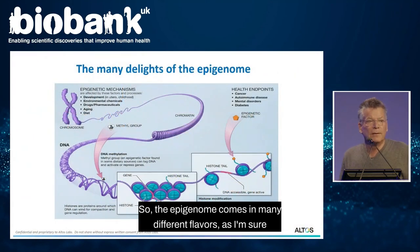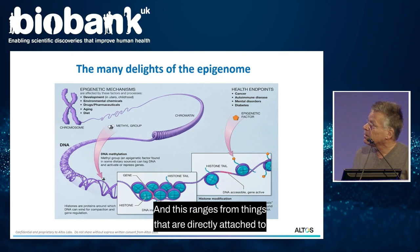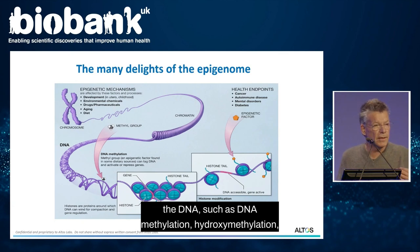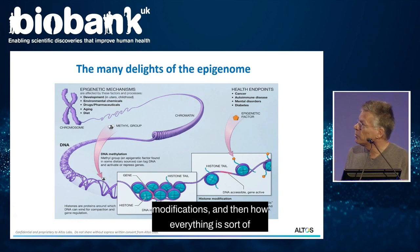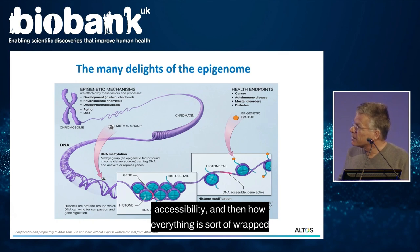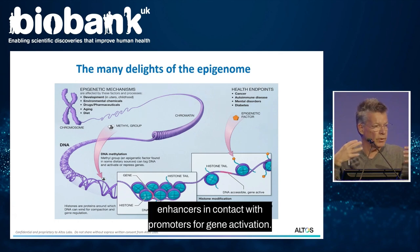The epigenome comes in many different flavors, as I'm sure many of you know. This ranges from things that are directly attached to the DNA such as DNA methylation, hydroxymethylation, formal cytosine, carboxycytosine, then histone modifications, then chromatin accessibility, and then how everything is wrapped up and established in higher order chromatin — bringing, for example, enhancers in contact with promoters for gene activation.